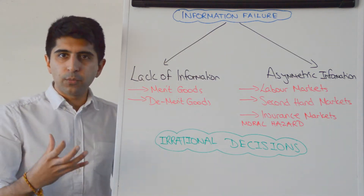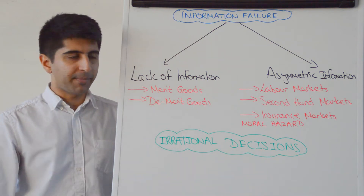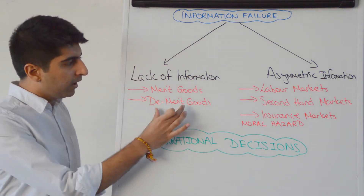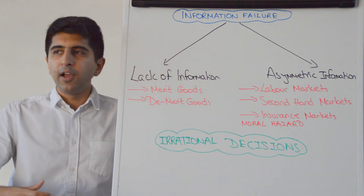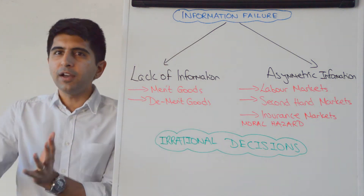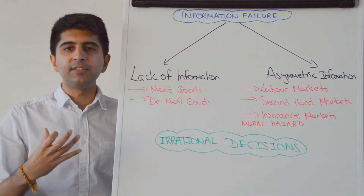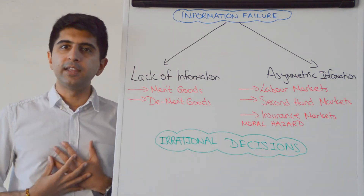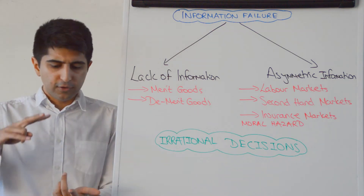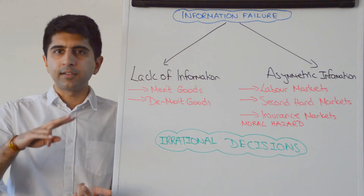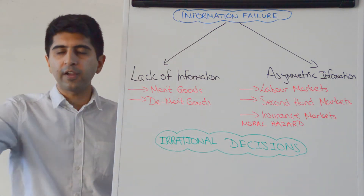Underconsumption takes place and that we can argue maybe is not utility maximising. A similar argument applies for de-merit goods — there isn't maybe enough information out there as to how bad consuming these de-merit goods are for the individual consumer. De-merit goods like cigarettes, like alcohol, like sugary drinks, like fast food.